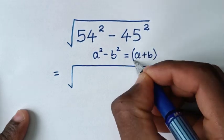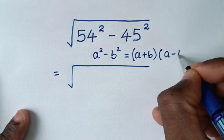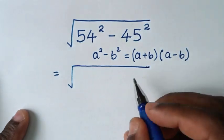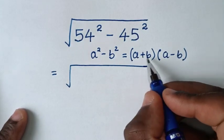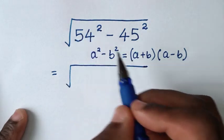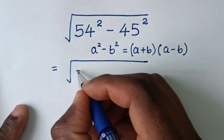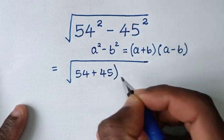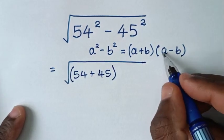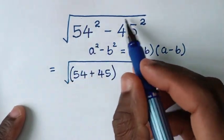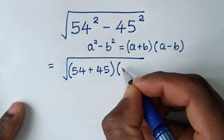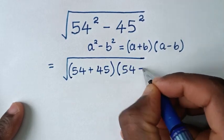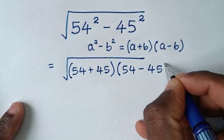Then we will apply this form of a plus b, it will be 54 plus 45, so it will be 54 plus 45 bracket, then times a minus b, it will be 54 minus 45, so it will be bracket 54 minus 45 bracket.